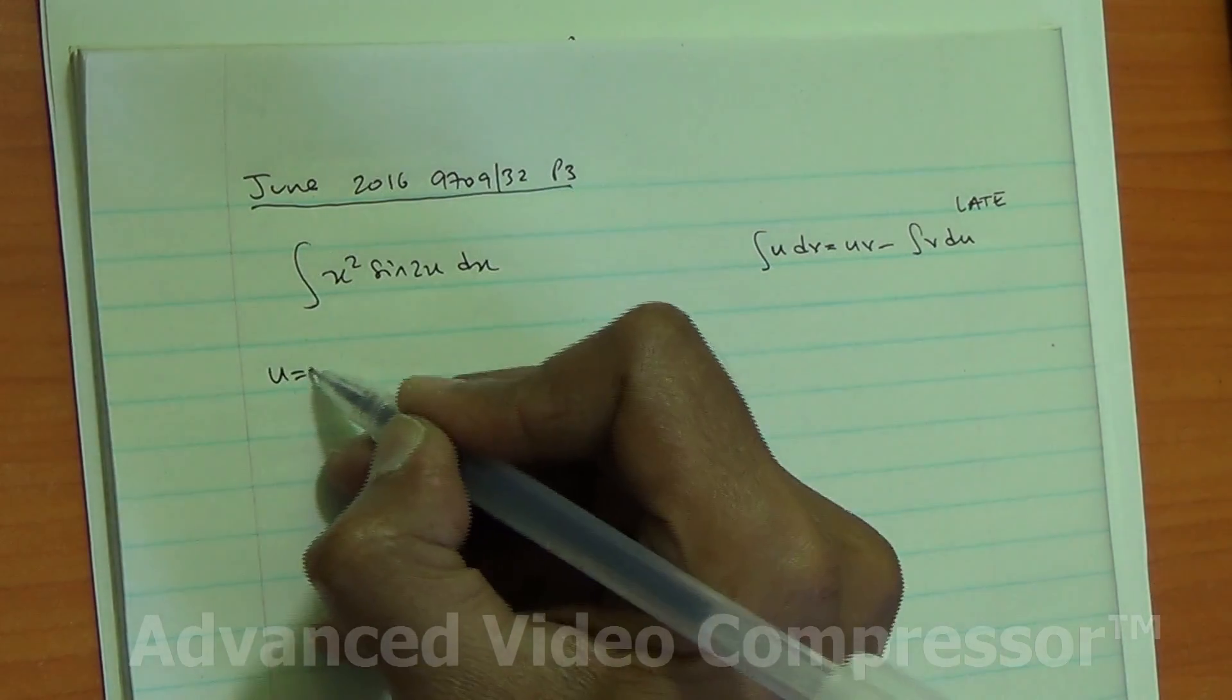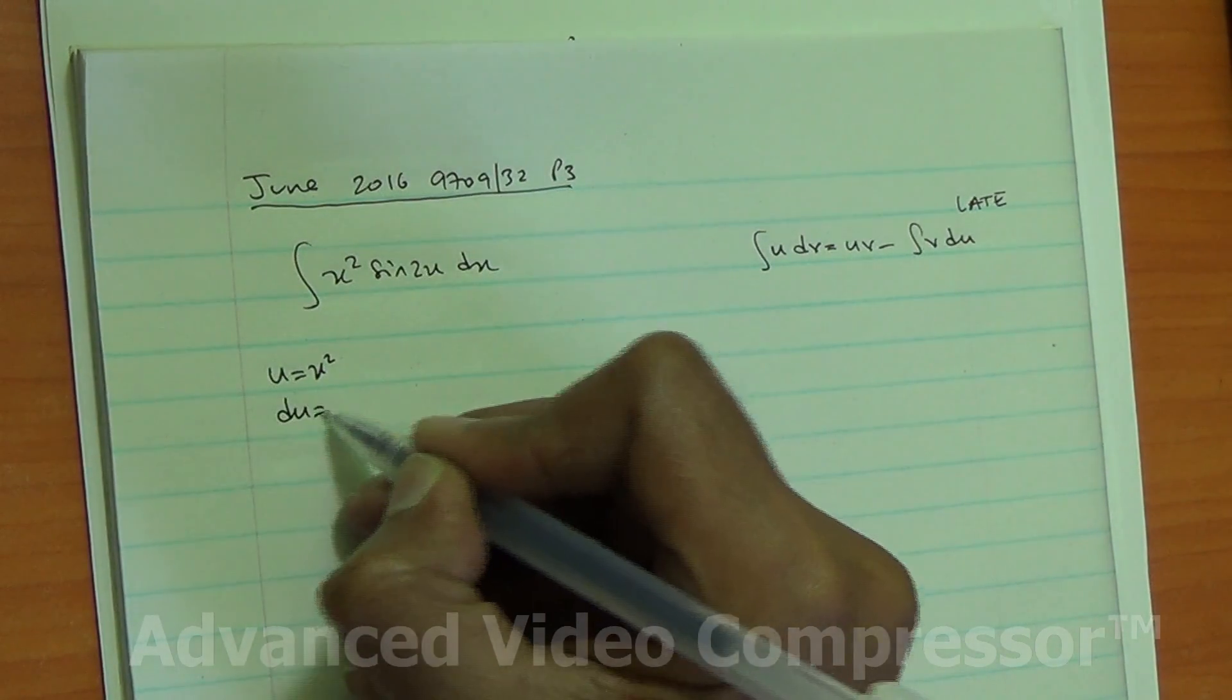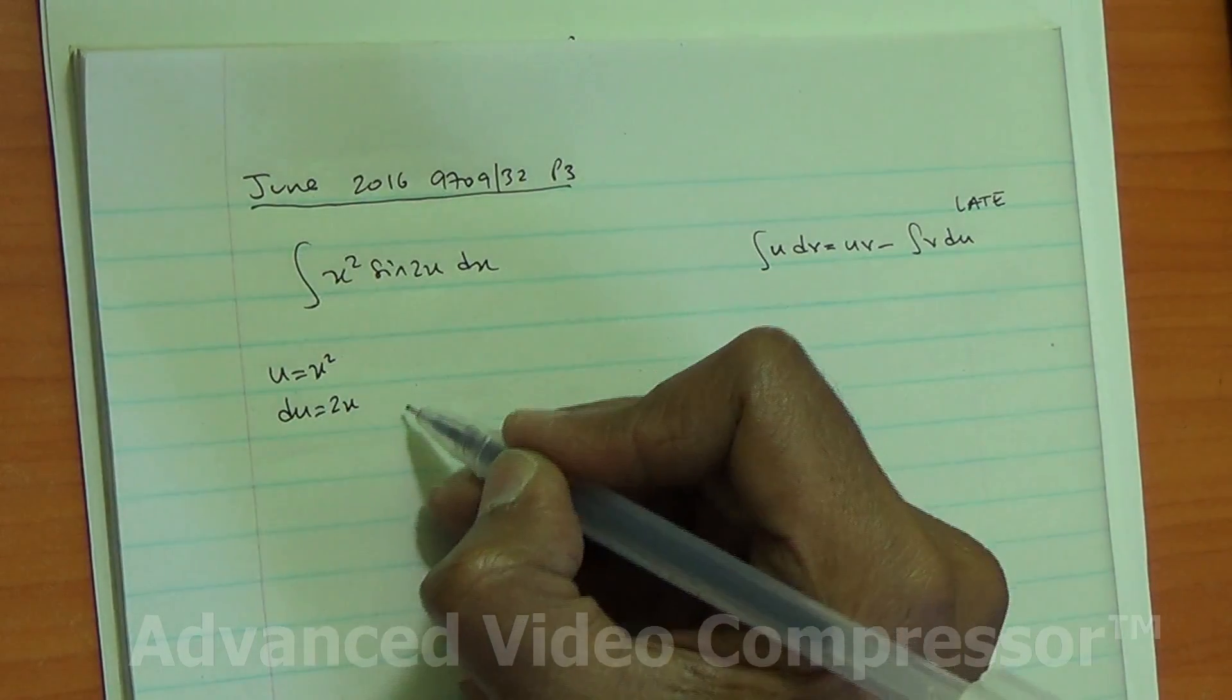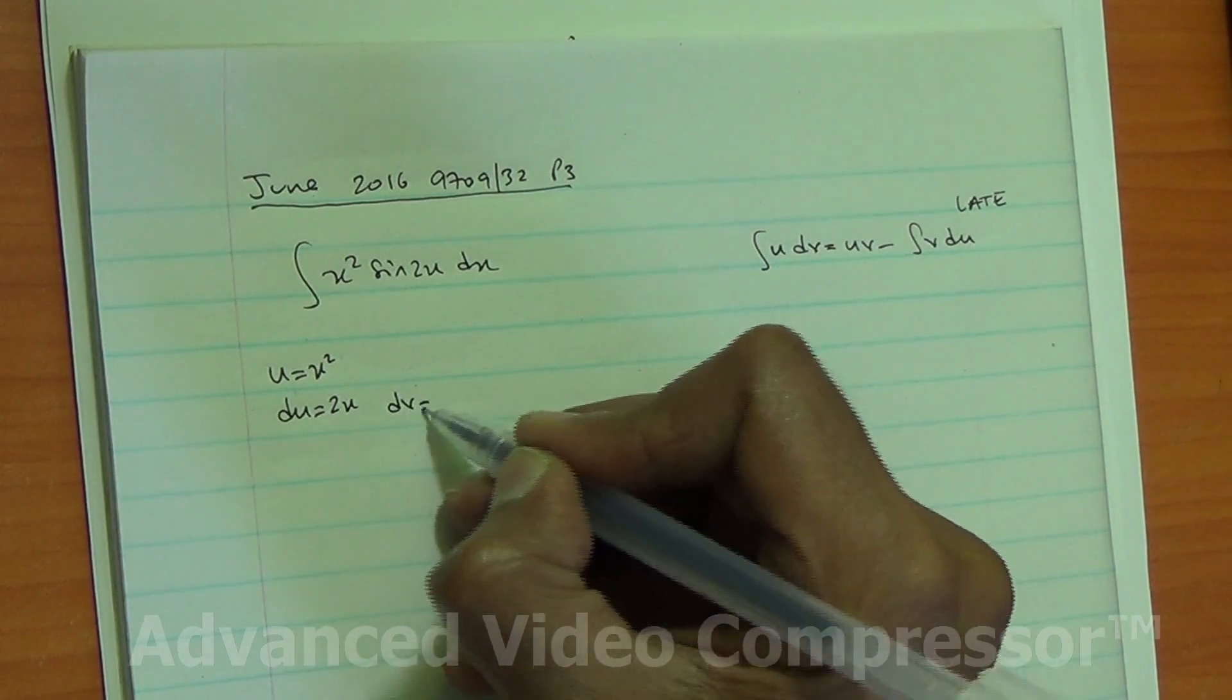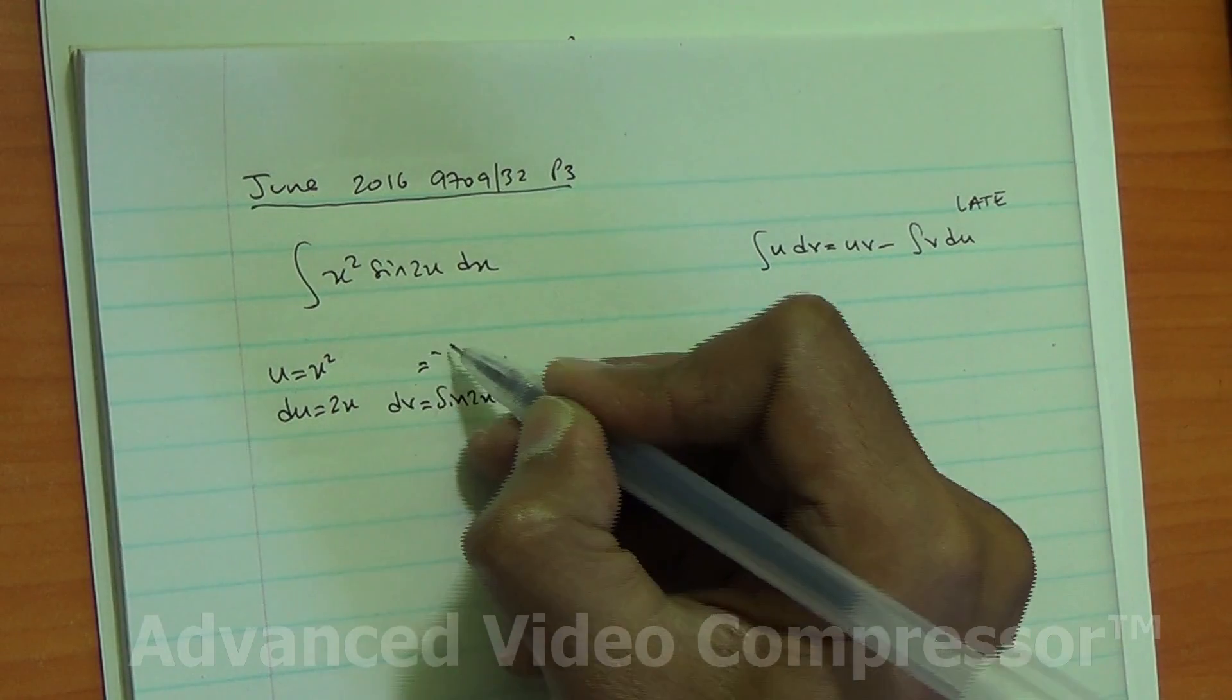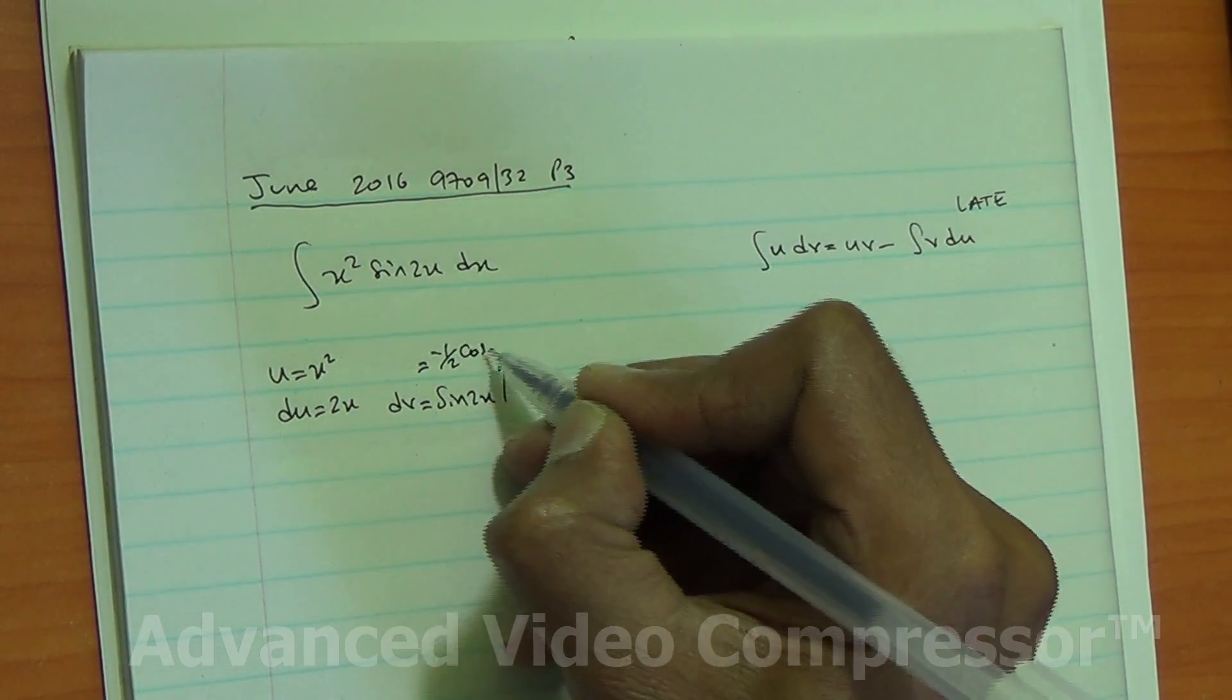So I've got x squared, therefore u is equal to x squared, and du is going to be 2x. Trigonometric is after, so we've got dv is equal to sine of 2x. Integrating that back, you're going to get negative half cos of 2x, so this is going to be v.